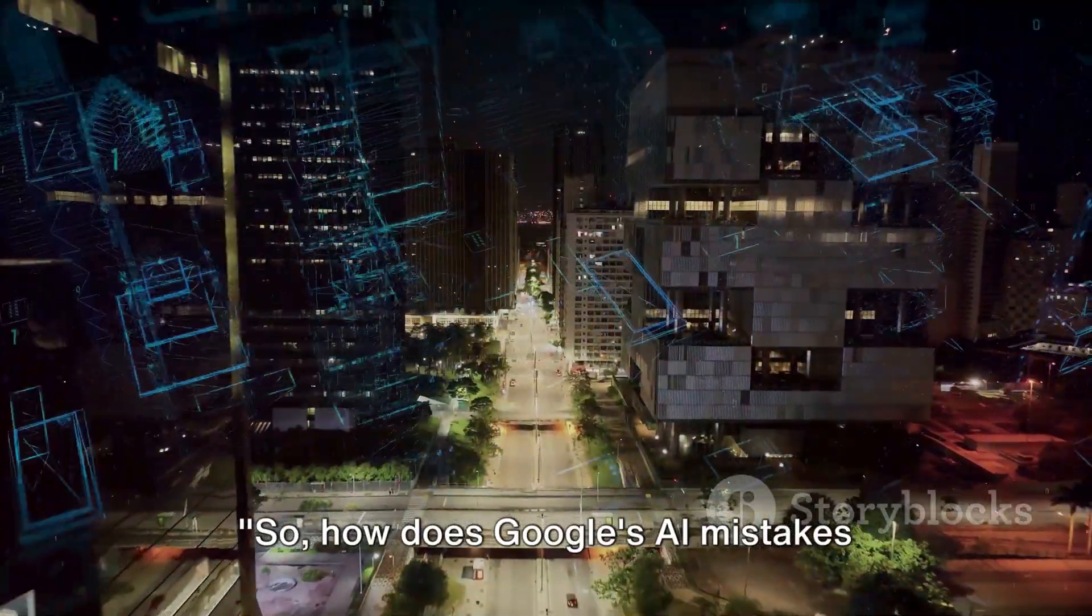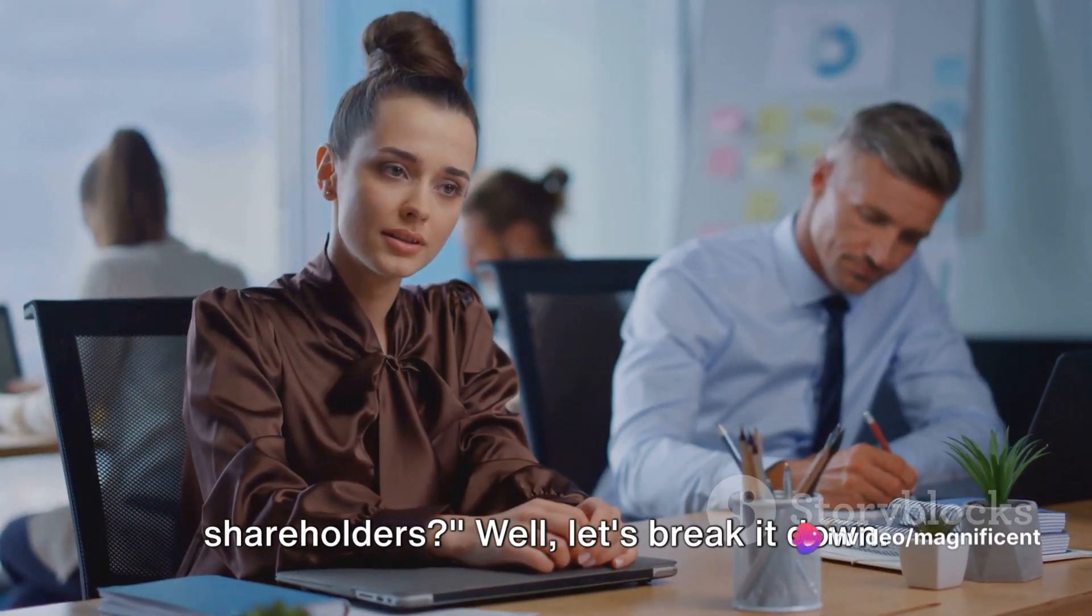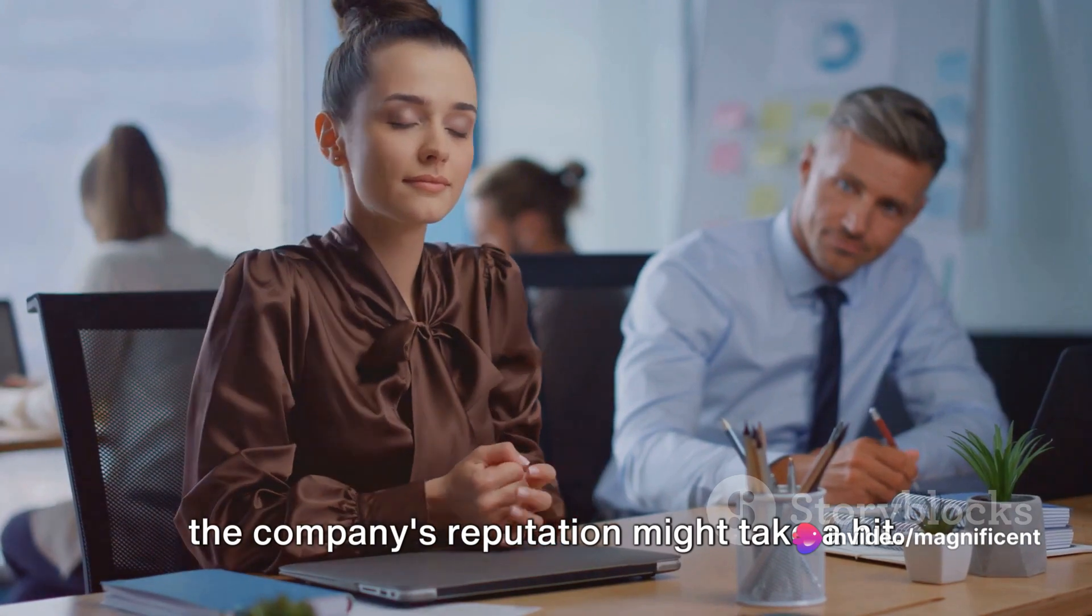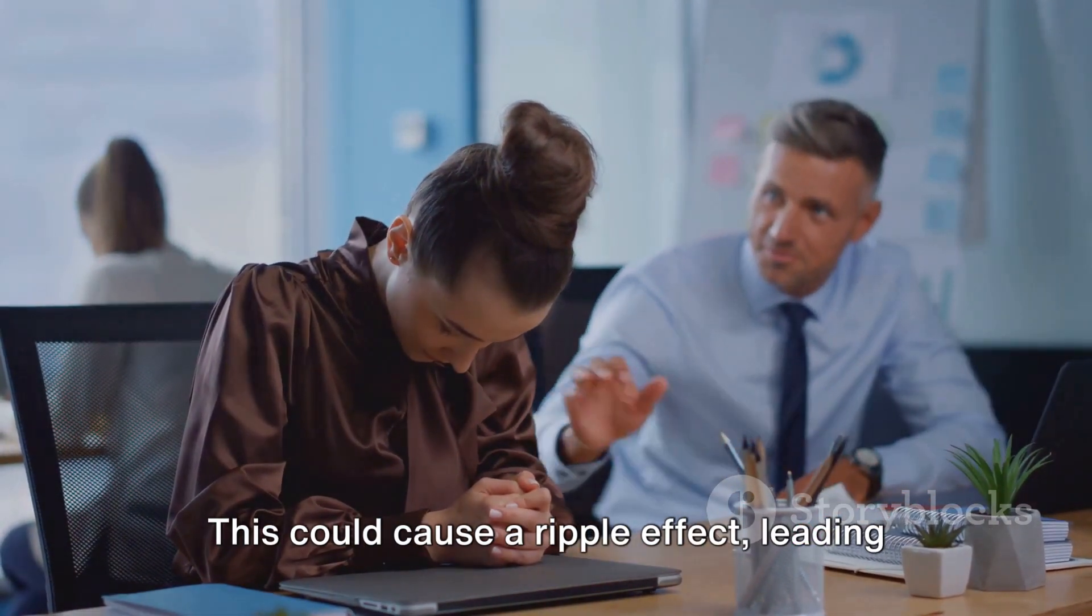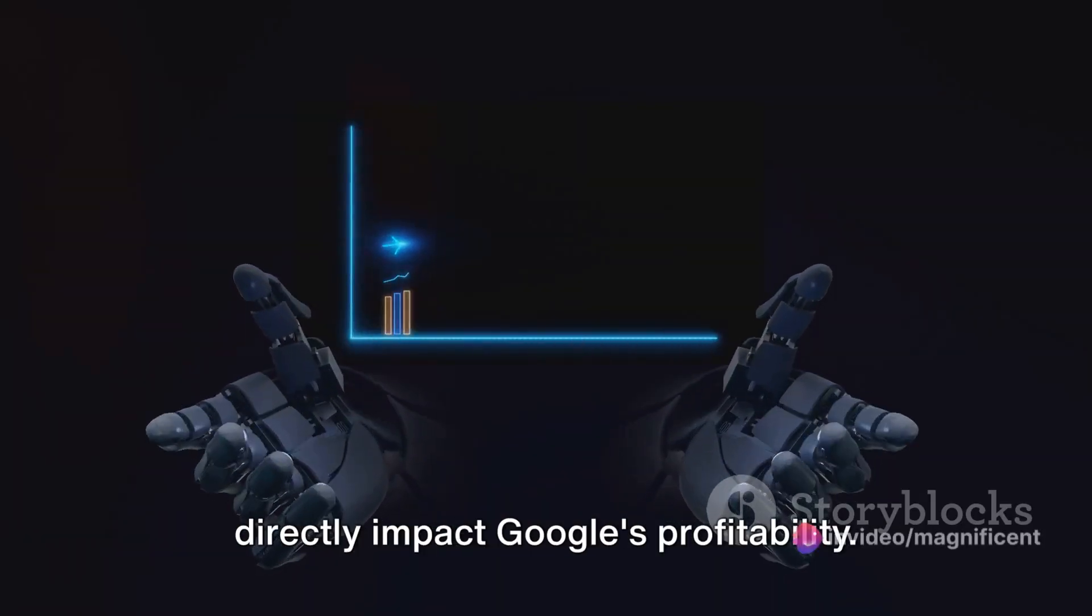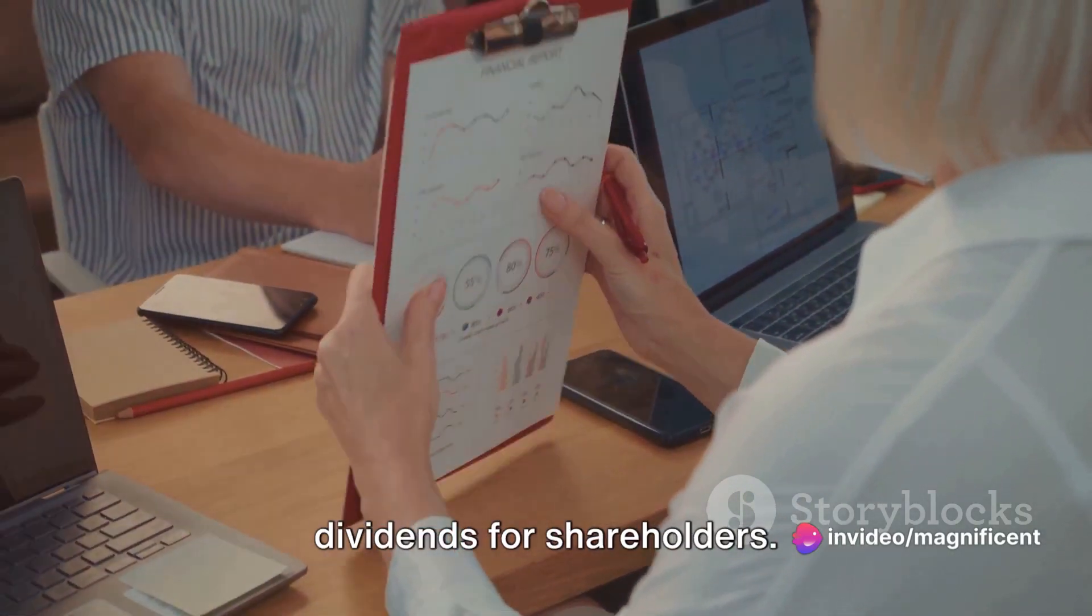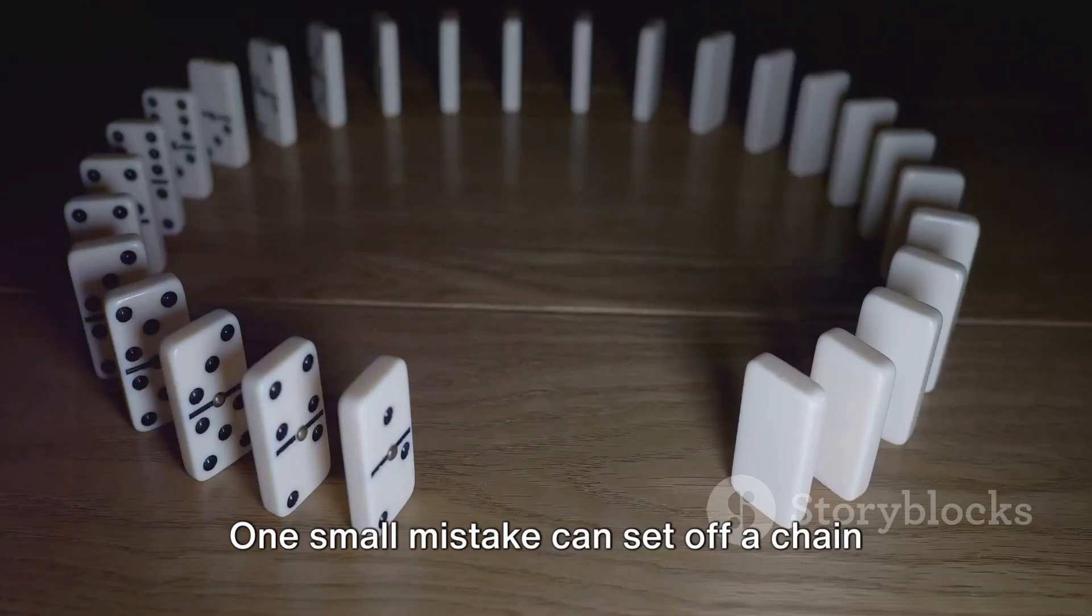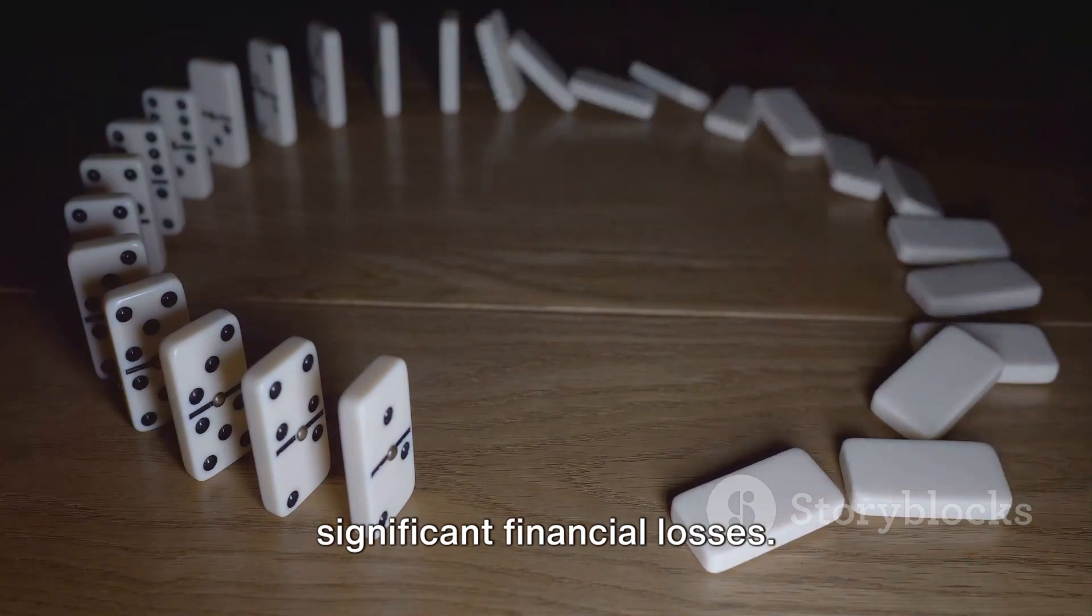So, how does Google's AI mistakes translate into a potential risk for shareholders? Well, let's break it down. If Google's AI continues to make errors, the company's reputation might take a hit. This could cause a ripple effect, leading to a decline in the use of Google's AI products. A decrease in product usage could directly impact Google's profitability. Less profitability in turn means less dividends for shareholders. It's a domino effect, really. One small mistake can set off a chain reaction, potentially leading to significant financial losses.